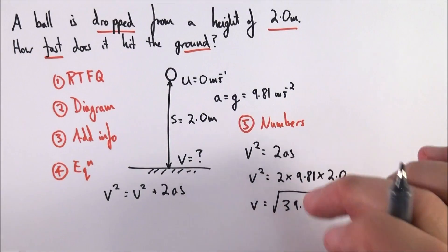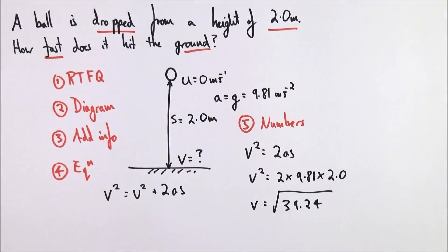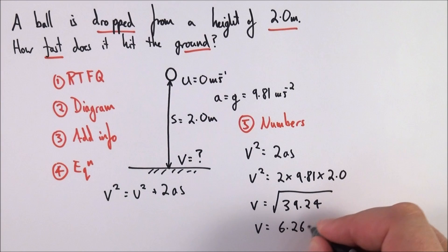I'm going to write down each step of the equation. Therefore V is equal to 6.264, and there's a few more numbers on my calculator which I didn't bother writing down, but this is not the answer.